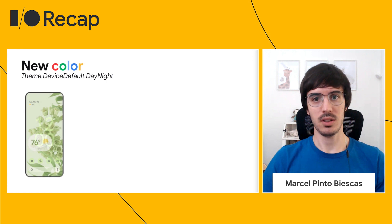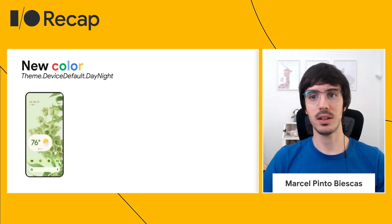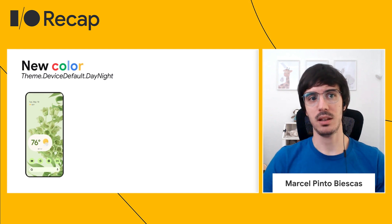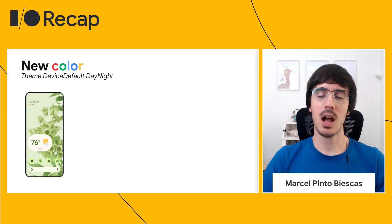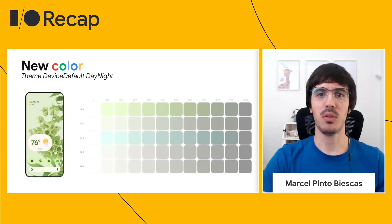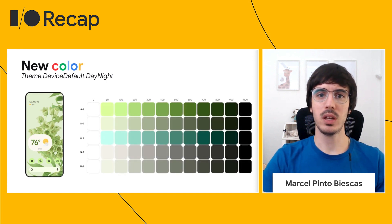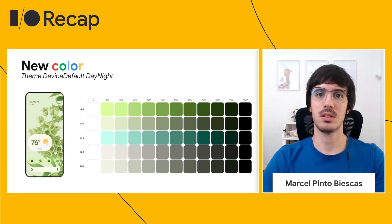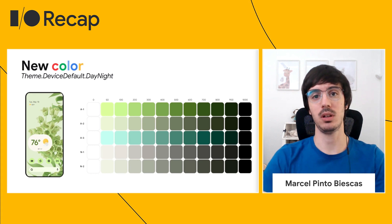In this first version of Android 12, we are bringing the device theme color to your application by allowing you to extend the theme device default that will automatically get the device theme colors. You can use them for your background, color accents, or text. There will be a full range palette of colors extracted from the device theme, or on Pixel it will extract from the wallpaper, so the full device and your application can get different coloring.